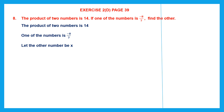Let the other number be x. The product of two numbers is 14, and one number is given to us, which is minus 8 by 7. When we multiply this by the other number, which we are going to call x, the answer that we are going to get is 14. Now we have to find the other number that is x. x will be equal to 14. Now this is like an equation. We are going to transpose minus 8 by 7 to the other side.